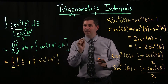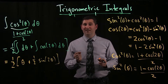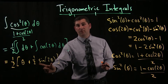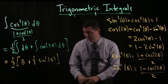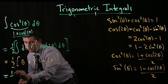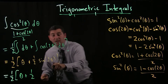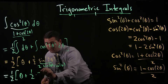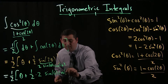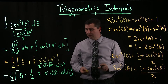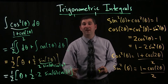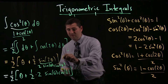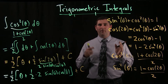Now you may be saying, wait, that's not what we got in the integration by parts video. And you'd be right, sort of. Here we rewrote it in terms of sine of two theta. There's a double angle formula for sine, and if we rewrote everything in terms of that, sine of two theta becomes two sine theta cosine theta. The half and the two cancel, and I'm left with one half theta plus sine theta cosine theta — which is exactly what we got in the integration by parts video. Of course, we always add our constant of integration at the end.